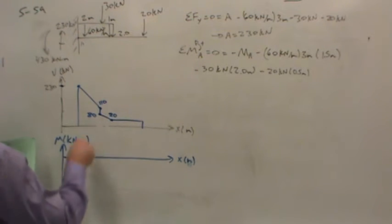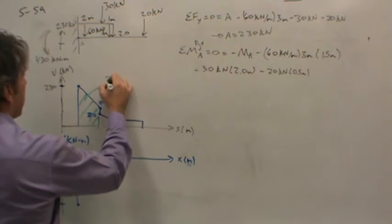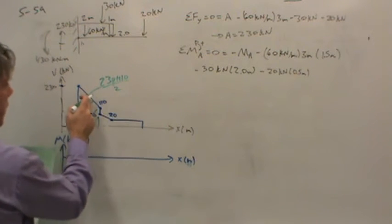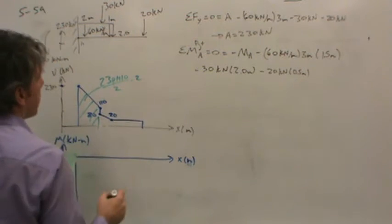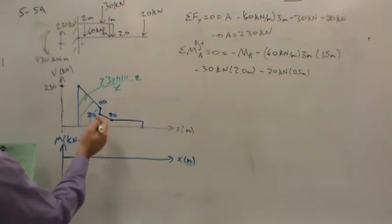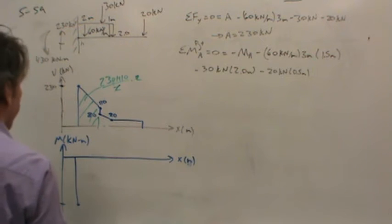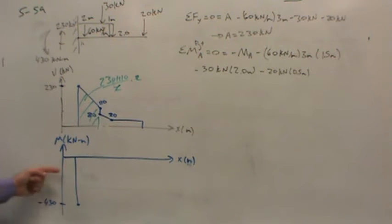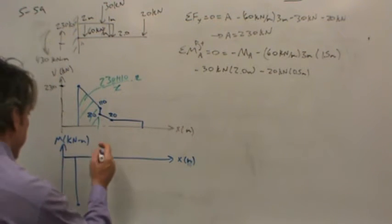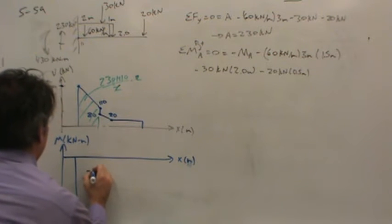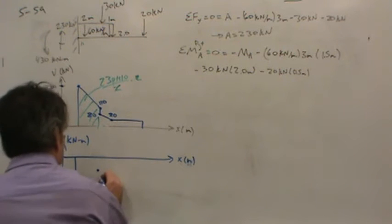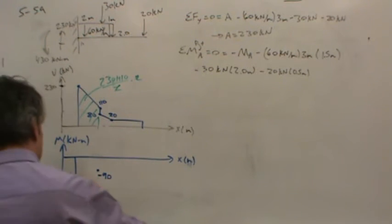So the first area we need to add up is this area. So this area would be equal to 230 plus 110 over 2. That's the average height. Multiplied by the width. Multiplied by 2. So 2 is going to cancel mathematically. You'll end up with 340. So if we move up from negative 430 by 340, that means that the moment has to go to negative 90.